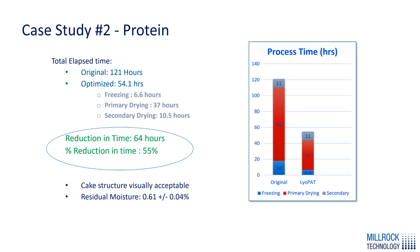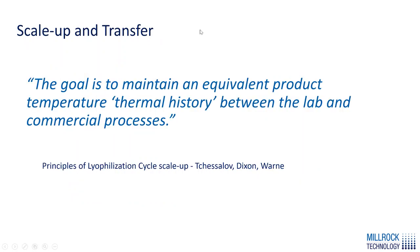Case two is with an actual protein — a 21 mL fill in a 50 mL vial. The original process was developed using an older technology from another company, producing a very conservative run of about 121 hours. We then implemented controlled nucleation, controlled heat flow, and auto-dry on this particular cycle and reduced the cycle to 54 hours. This is a 55% reduction in primary drying time, and it gave us a cake structure that was visually acceptable with an acceptable residual moisture content.